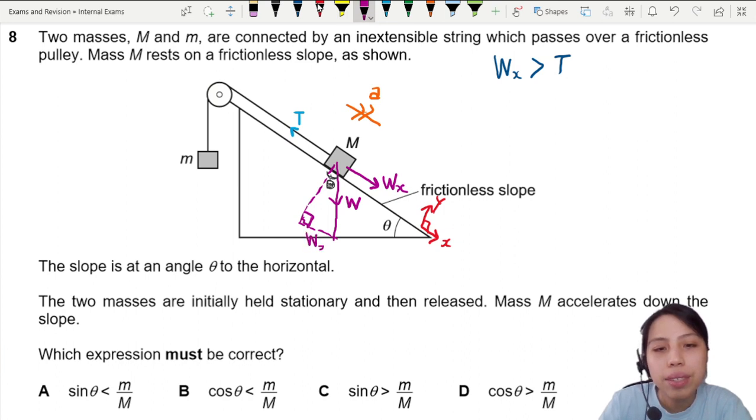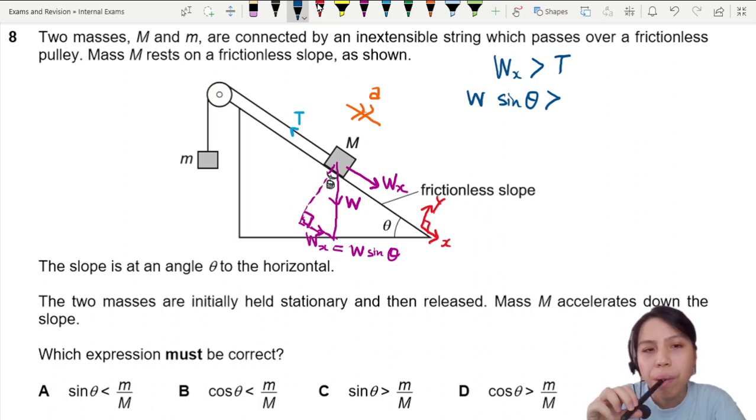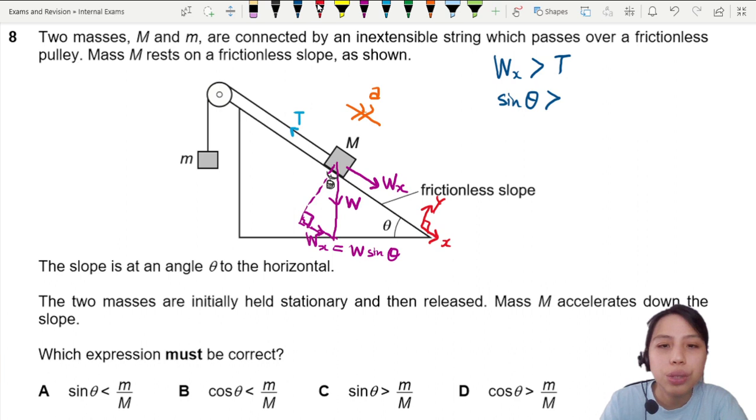So if you want to find what is WX, we have to put together our brains and say, WX is going to be opposite over hypotenuse. Sine W sine theta. That's the horizontal component of WX. We're going to substitute that in the equation. So here is W sine theta greater than T. By the way, W, we're going to change this to MG. Weight is MG. So big M times G. Now right here, this one is big M times G times sine theta.